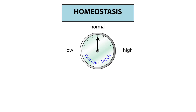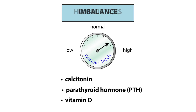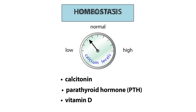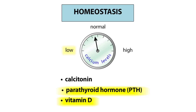Calcium levels in the blood are regulated by three hormones: calcitonin, parathyroid hormone (PTH), and vitamin D. When calcium levels rise, the hormone calcitonin acts to reduce blood calcium. When calcium levels are too low, PTH and vitamin D act synergistically to increase blood calcium.